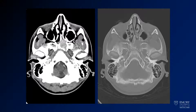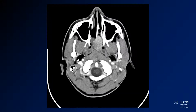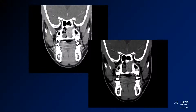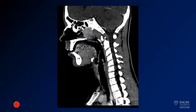We have CTs with contrast: soft tissue on the left and bone window on the right. Here we have a contrast-enhanced CT from just a little bit lower, and a couple of coronal CTs as well. Finally, we have a sagittal image from the CT.